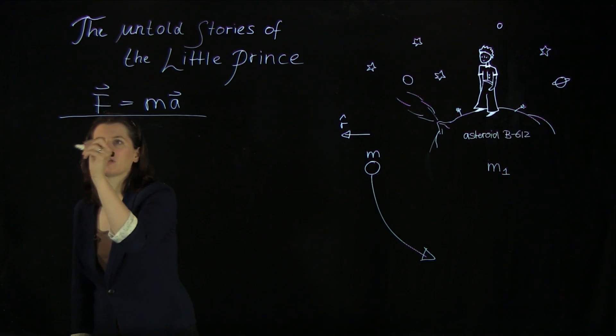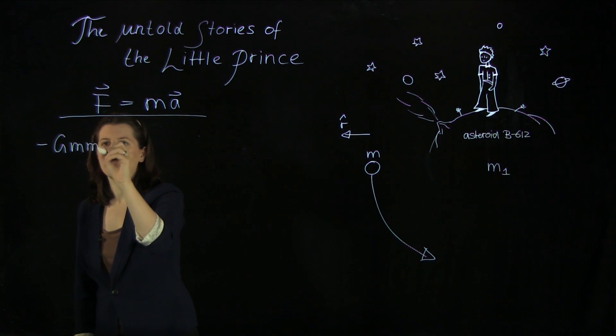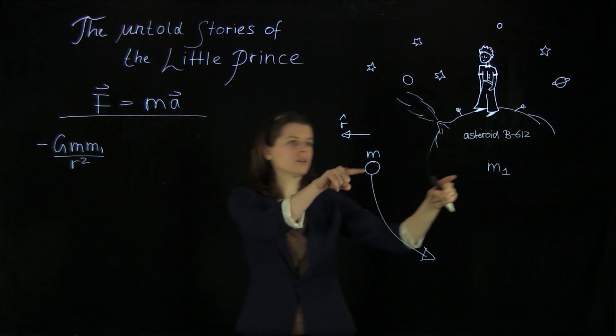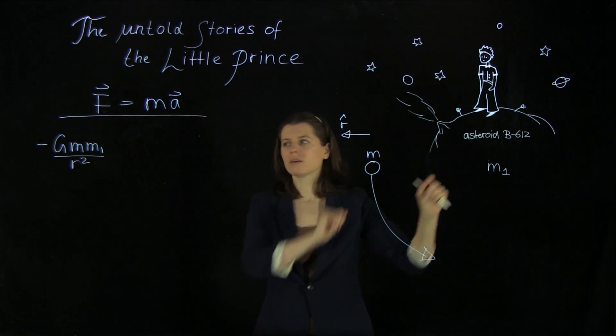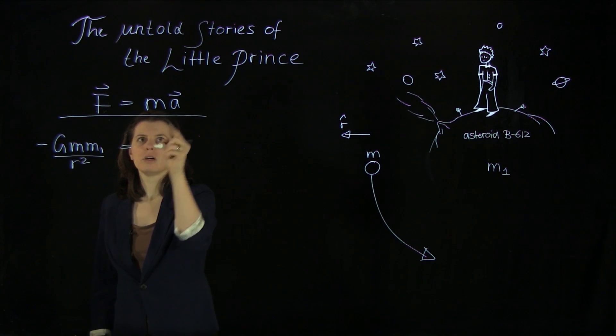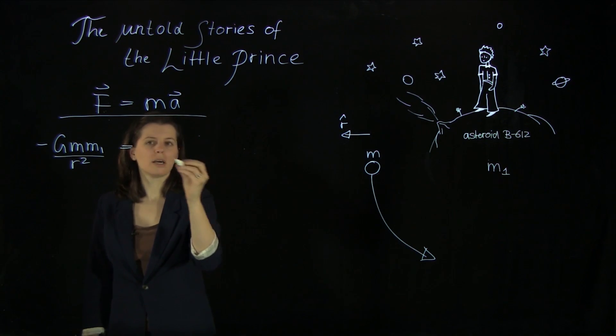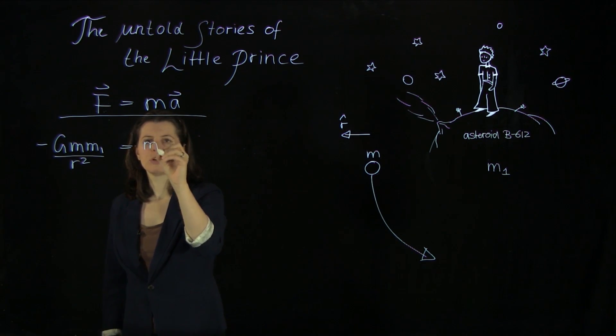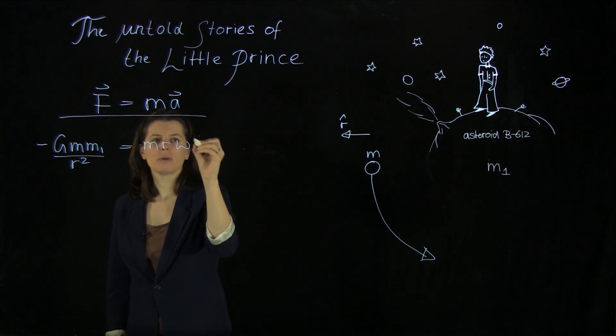So we have the gravitational universal law here, minus gmm1 over the distance squared. So the distance here between the two planets, r, which is what we want to calculate. And then we have over here, for circular motion, the description of m r omega squared.